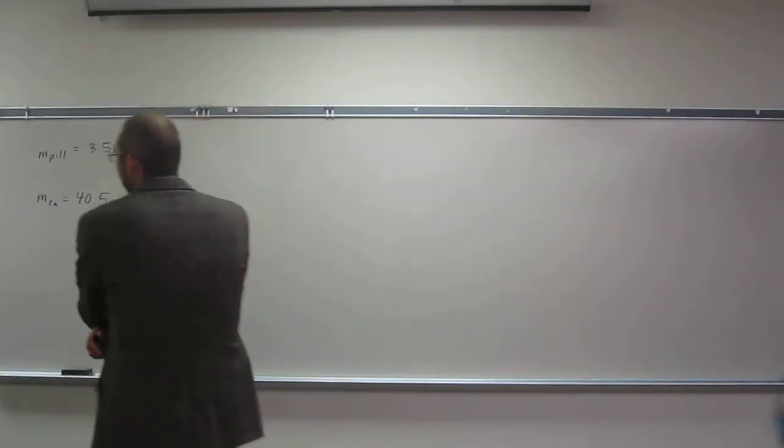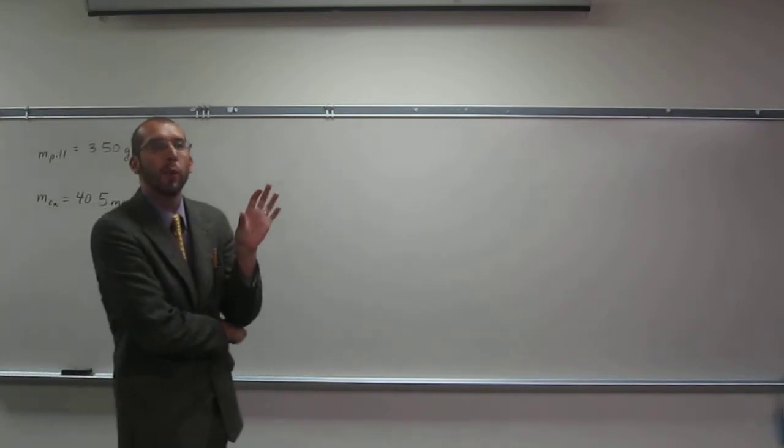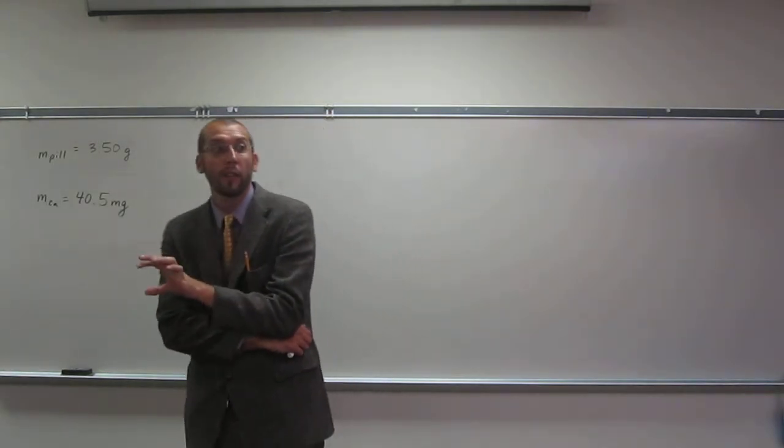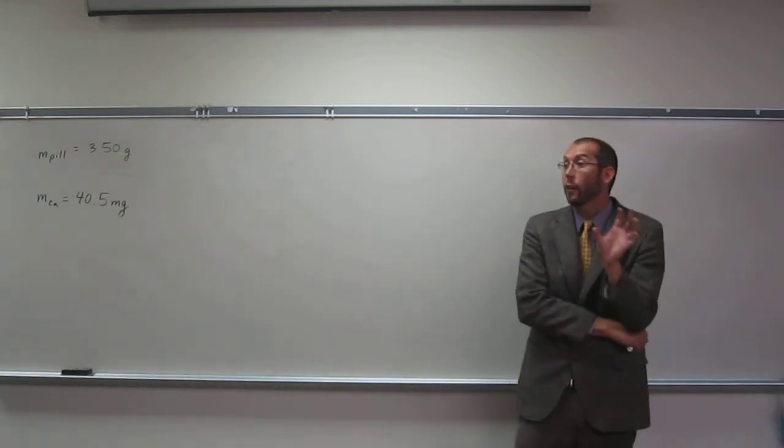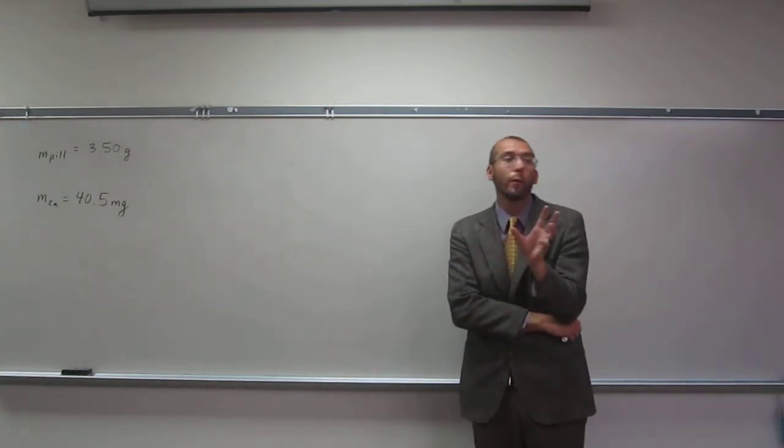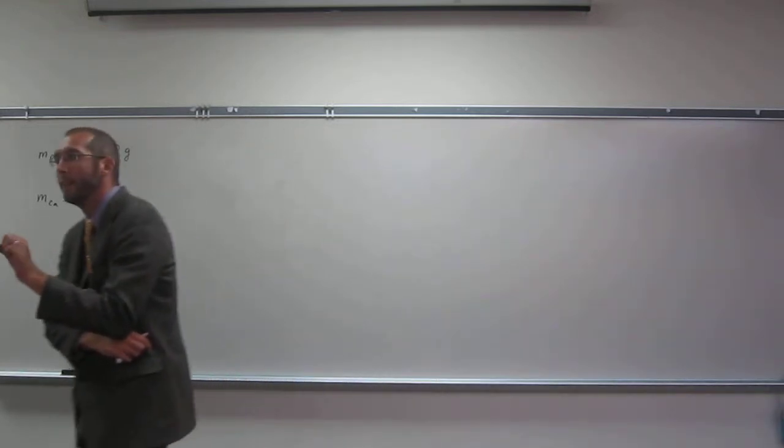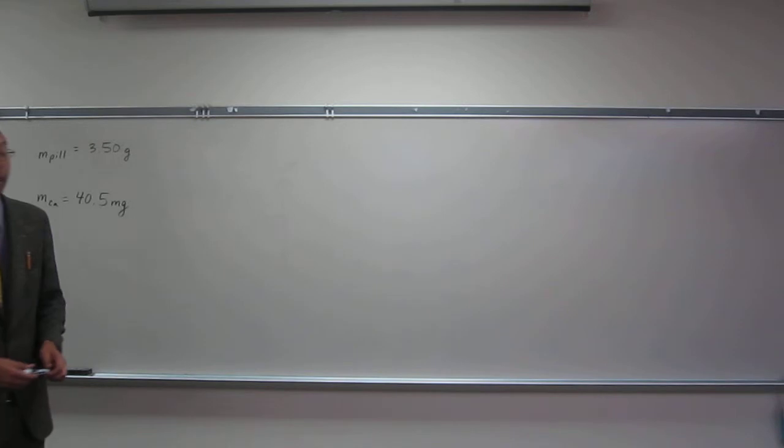So this question is a mass by mass problem. But remember, mass/mass percent problems, we did mass divided by mass times 100%. This one's a parts per million problem. So instead of percent, which everybody understands cent means 100, parts per million, what are we going to multiply it by? 10 to the 6, or a million.